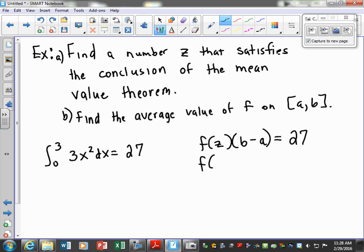So f(z)... what's going to be our b? Three, good. What's our a? Our lower limit is zero. So f(z), now we can go ahead and evaluate what is our function evaluated at z. Basically, if I plug the z in everywhere there's an x, we'll go ahead and plug that in now. So that would be 3z squared.